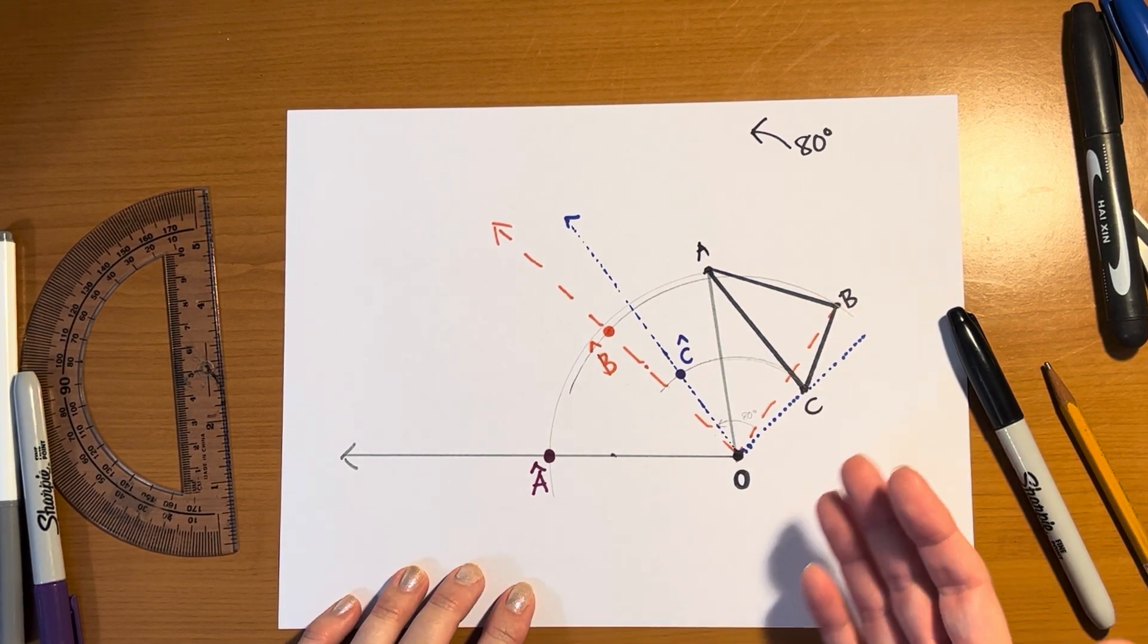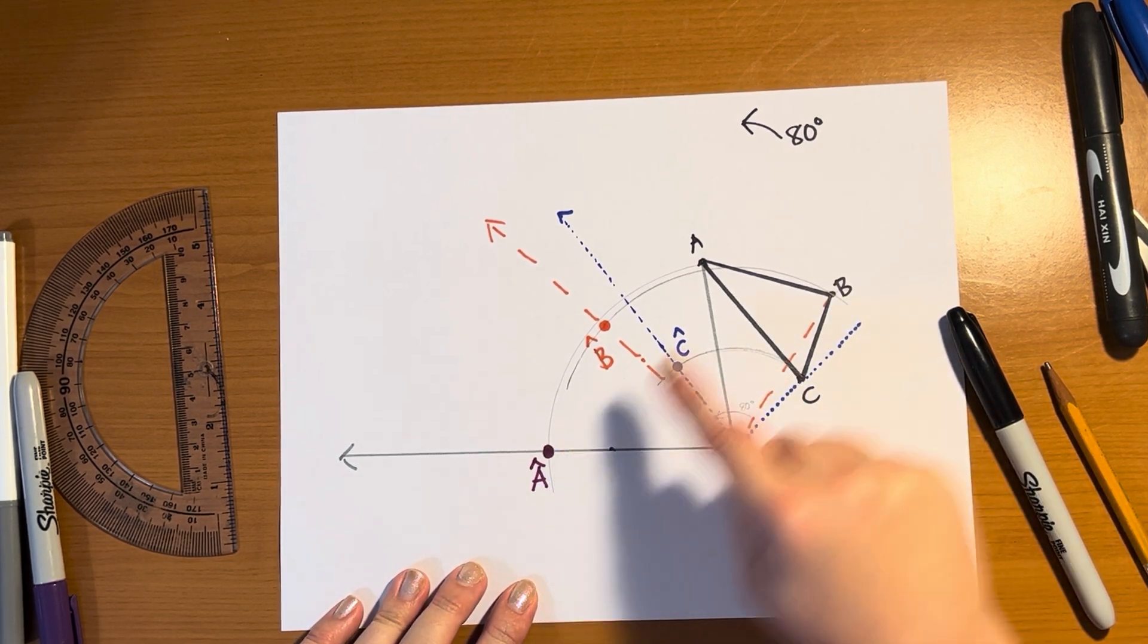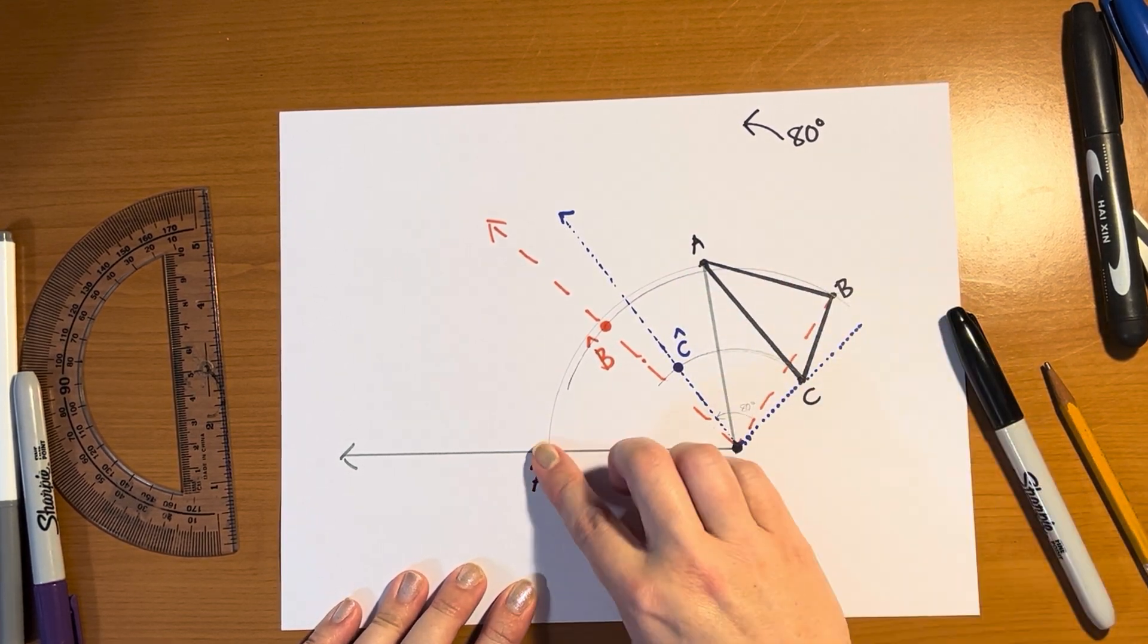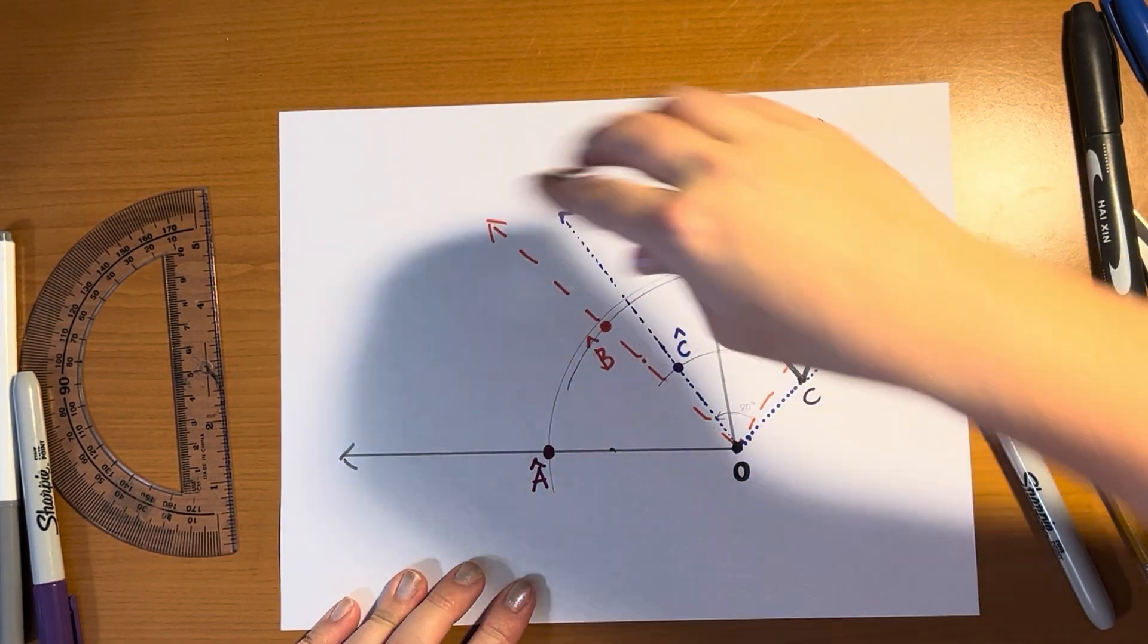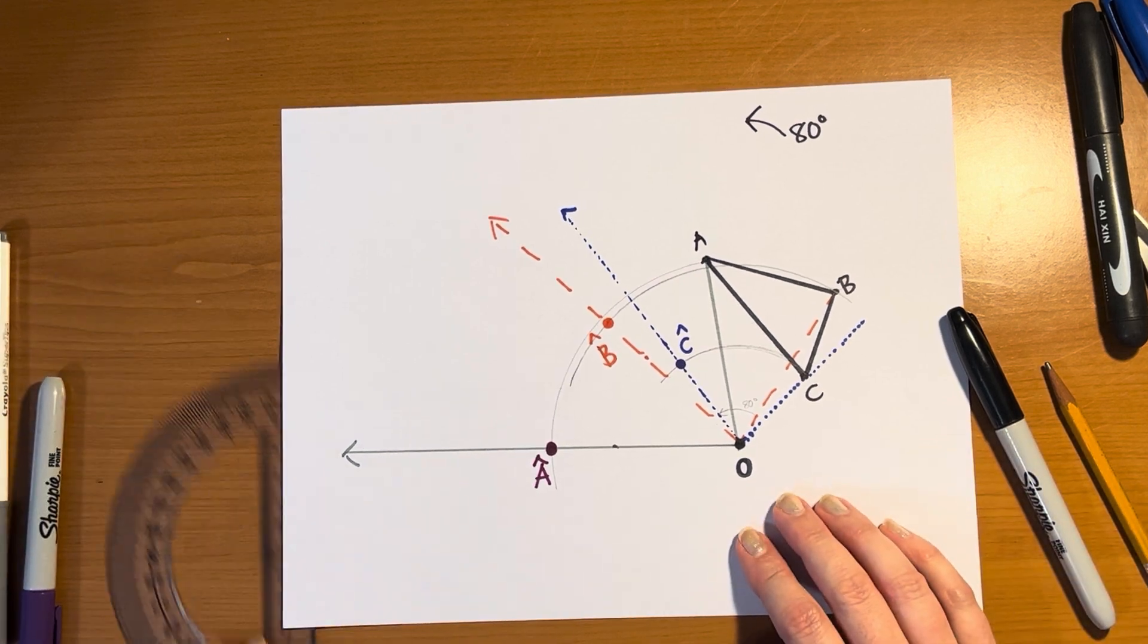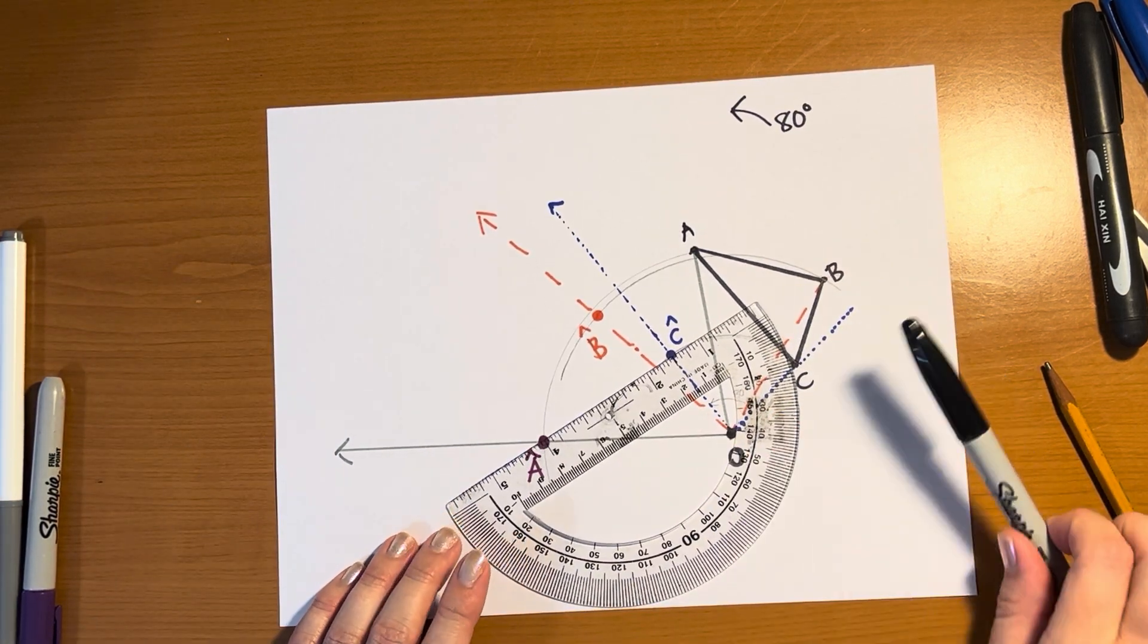And what that actually is going to do is because rotations preserve distances, this line from A to C, this line from A to the C are the same distance. And so if I rotate this entire line, it's going to end up over here between A hat and C hat. And so what I can do to finish this up is just connect the dots